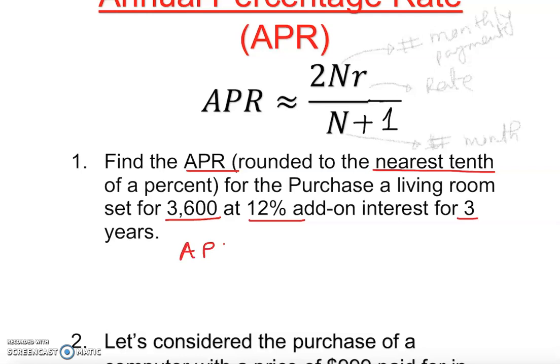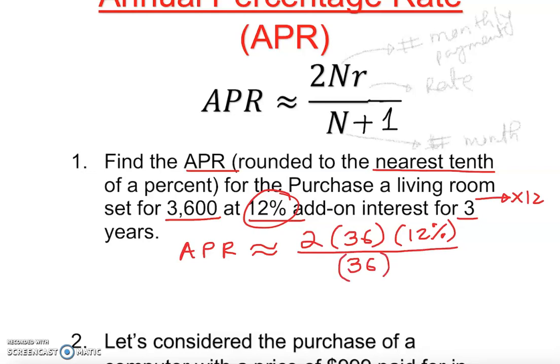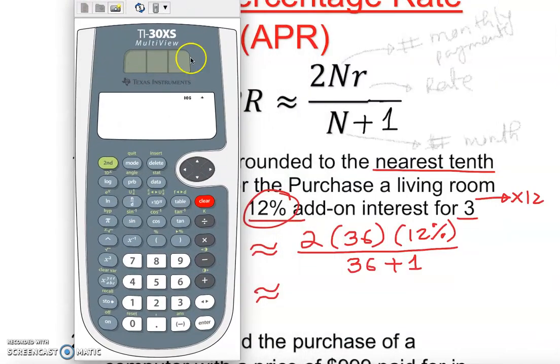APR is approximately 2 times N - N is 3 times 12, which is 36 - times the rate, which is 12%, so 12% over N, which is 36, plus 1 by default. I'll just plug this into the calculator.